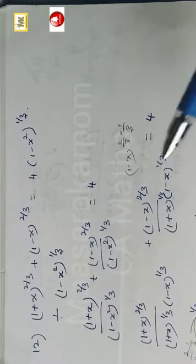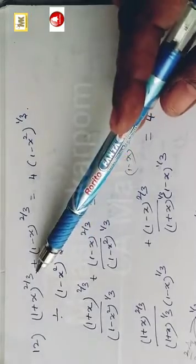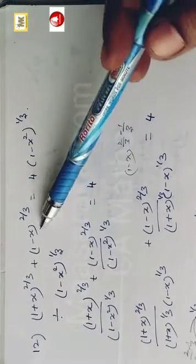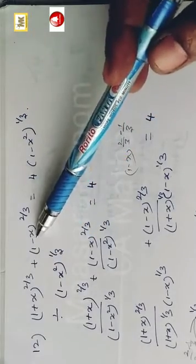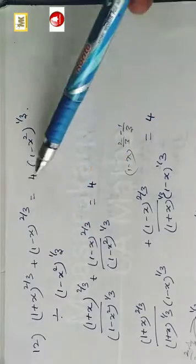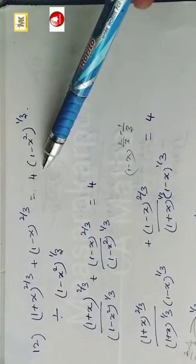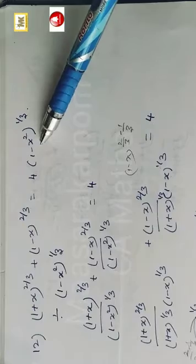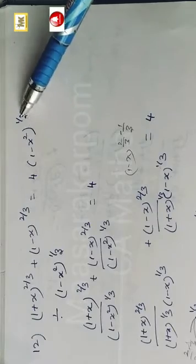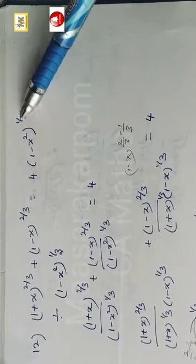Question number 12. (1 + x) whole power 2/3 plus (1 - x) whole power 2/3 is equal to 4 into (1 - x²) whole power 1/3.